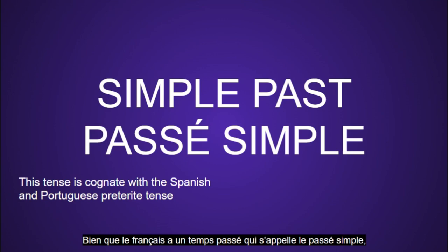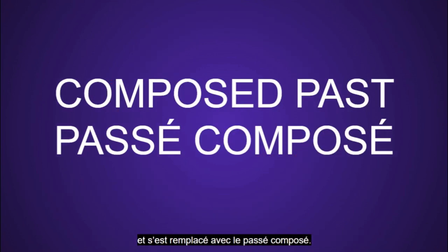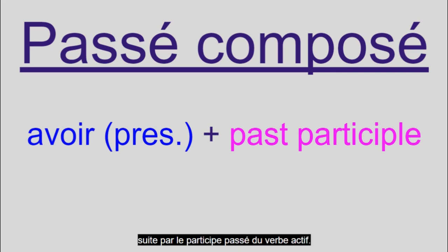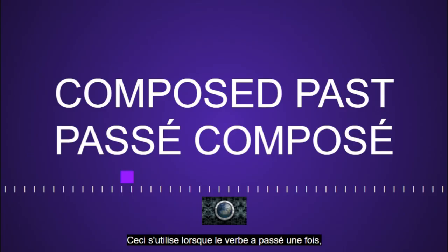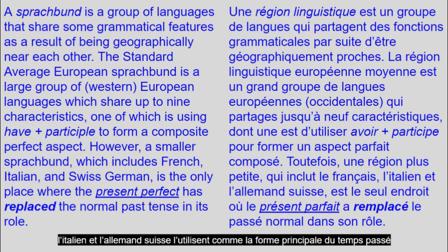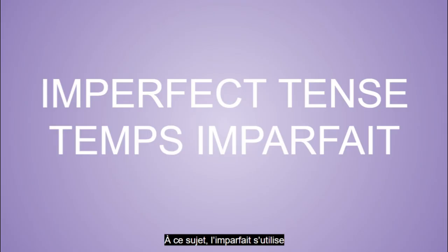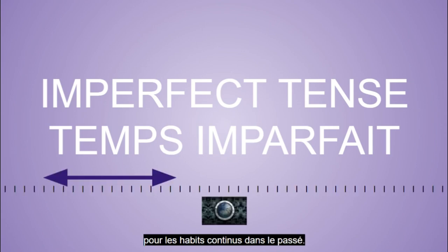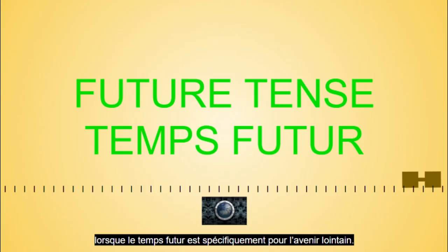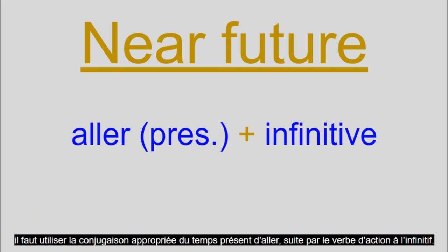While French has a past tense called le passé simple, that tense is now obsolete and has been replaced with le passé composé. The composed past is named that because it's composed of the appropriate form of avoir, meaning 'have,' followed by the past participle of the action verb. This is used when the verb happened once or had a clearly defined start and end. Many languages in the Standard Average European sprachbund have this composed past feature, but only those in a smaller sprachbund involving French, Italian, and Swiss German use it as the main past tense form when not imperfective. The imperfect tense, or l'imparfait, is used for continuous habits in the past. The present tense is for anything happening now or routinely, while the future tense is specifically for the far future. If you want to talk about the near future, you should use the appropriate present tense conjugation of aller, meaning 'go,' followed by the action verb in infinitive form.